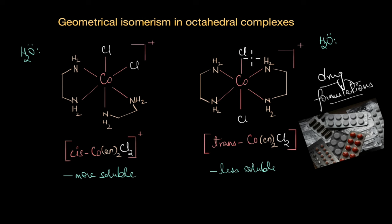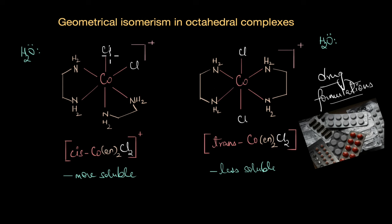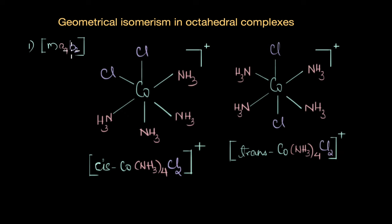Let's explore geometrical isomerism in different octahedral complexes. In a typical octahedral complex, a metal is surrounded by six ligands. For such a complex to exhibit geometrical isomerism, the ligands must be arranged in such a way that we get unique and distinct spatial arrangements. The first type of octahedral complex we'll look at is MA₄B₂.